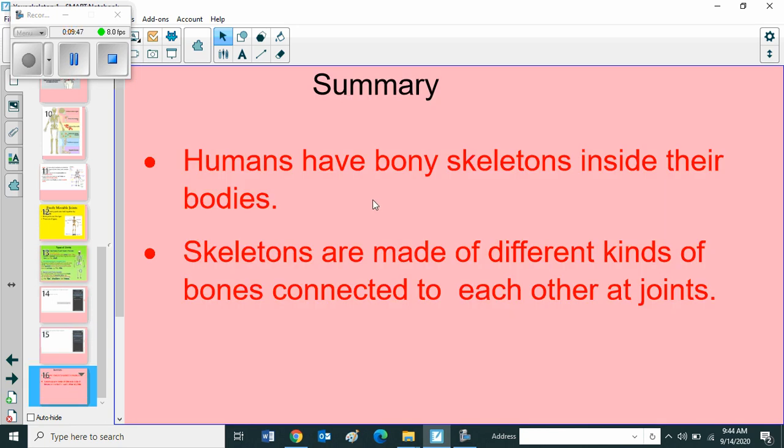Next children, we can come to the summary of our lesson. Humans have bony skeletons inside their bodies. Skeletons are made of different kinds of bones connected to each other at joints. So children, this is the summary of our lesson. Hope you understood. Bye. Thank you. Have a nice day.